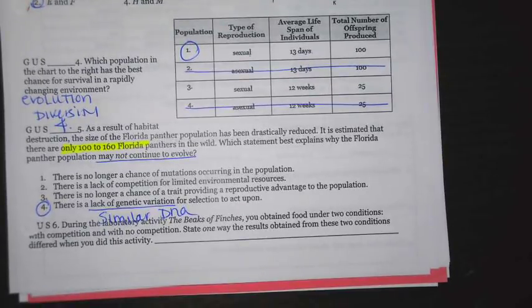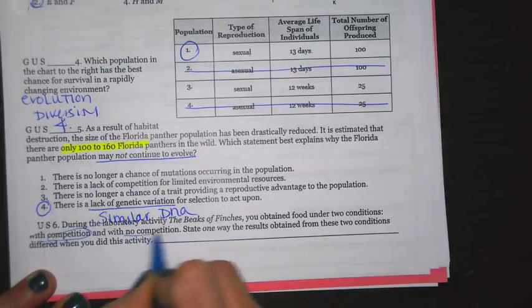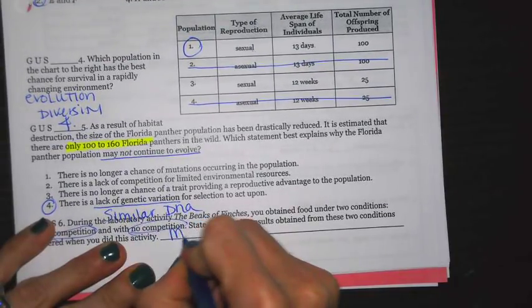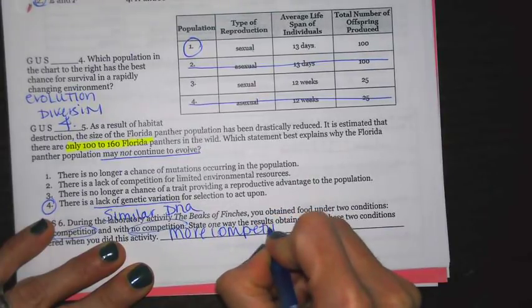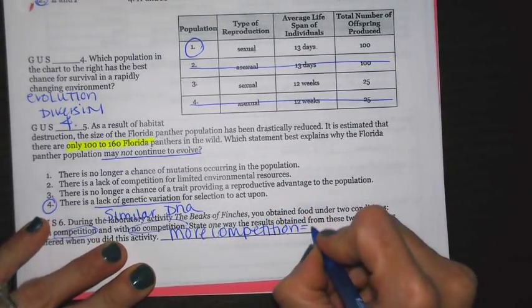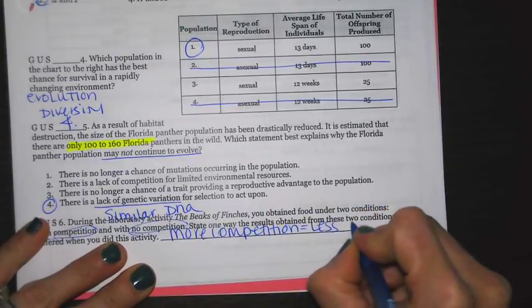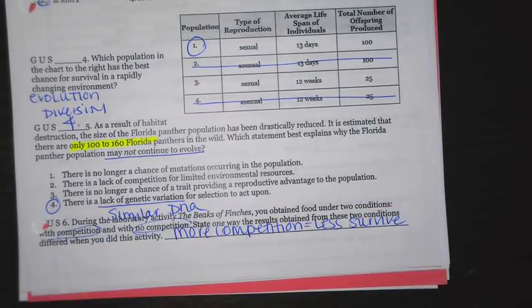During the lab activity, the beaks of finches, you obtained food under two conditions: with competition and with no competition. State one way the results of these two conditions differed. When you had more competition, it was a lot more challenging to get food. Since it was more challenging to get food, you had less people, or beak types, able to survive.